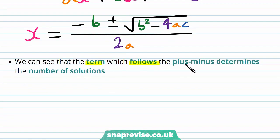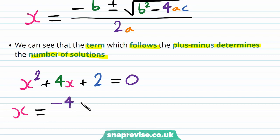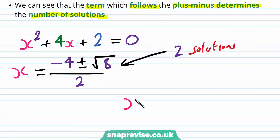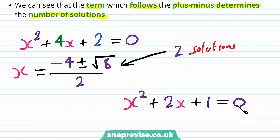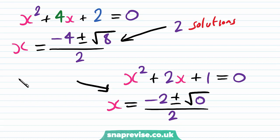We can see that the term which follows the plus-minus determines the number of solutions. For x squared plus 4x plus 2 equals zero, we get x equals minus 4 plus or minus the square root of 8, all divided by 2. This has two solutions because the square root of 8 with the plus-or-minus gives two different values. Similarly, for x squared plus 2x plus 1 equals zero, we get x equals minus 2 plus or minus the square root of zero, all divided by 2. This has one solution, because plus or minus square root of zero is the same value.